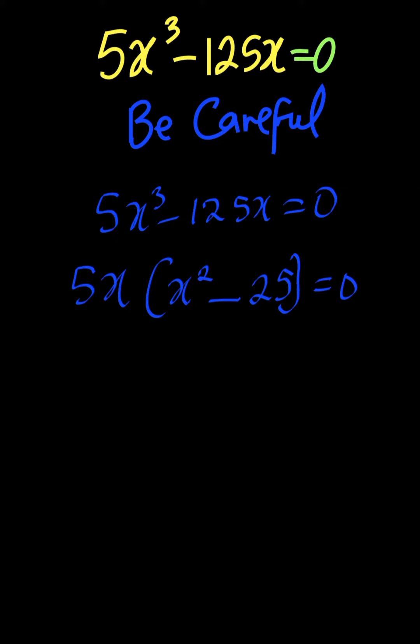Many students will rush this and move this 125 to the right-hand side and cancel out the x and forget to get the 3 zeros of this polynomial. So you have to be very careful because since the power is 3, it is supposed to have 3 solutions.